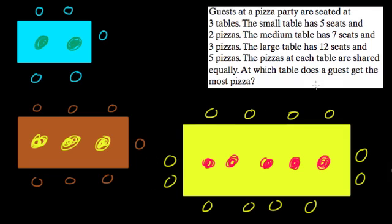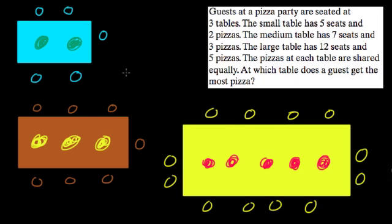The question is: assuming that the pizzas are shared equally at each table — so everyone at each table shares all of the pies equally — and assuming that even though the pizzas were drawn in different colors and sizes, they are all the same size. At which table does a guest get the most pizza?